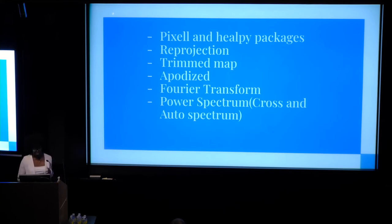So I use the pixell and HEALPix packages. The pixell package is where we store the ACT maps in, and the HEALPix package is where we store the Planck maps in. And then we project the maps. Pretty much we convert the Planck maps into the package that the ACT maps use, which is pixell, in order to examine smaller patches of the sky. And then we trim down the maps, apodize them, and we use Fourier Transform in order to calculate the power spectrum.